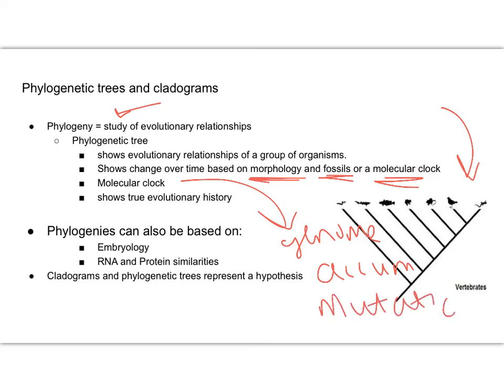My molecular clock can be different from organism to organism. The molecular clock is the average rate at which the species genome will accumulate these mutations, and these are going to help show a true evolutionary history.